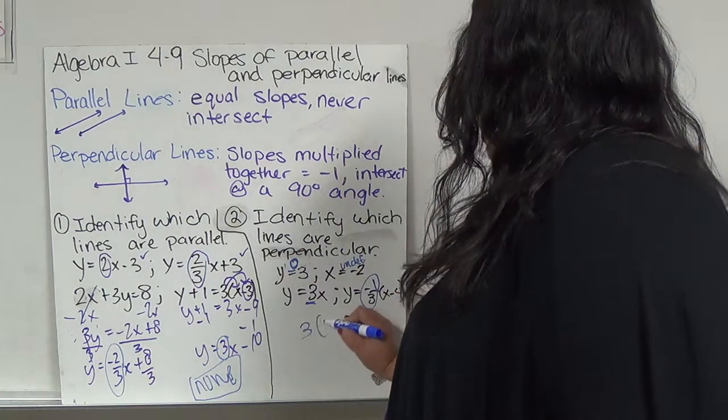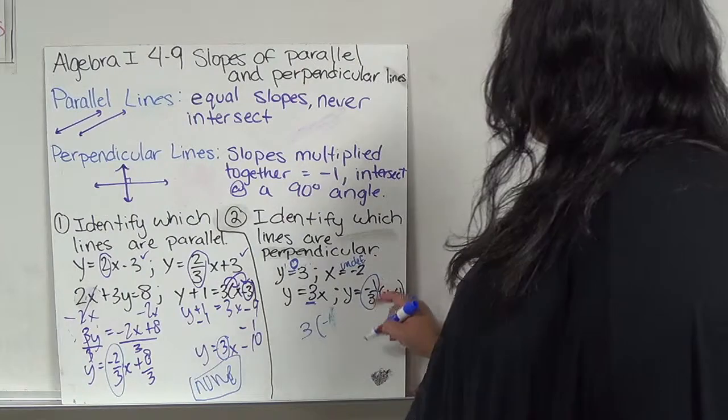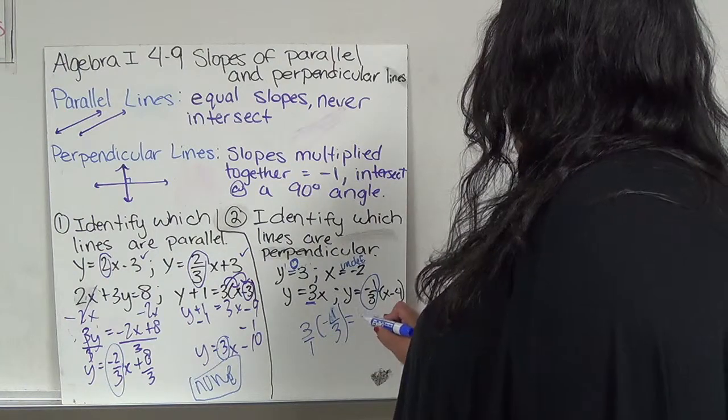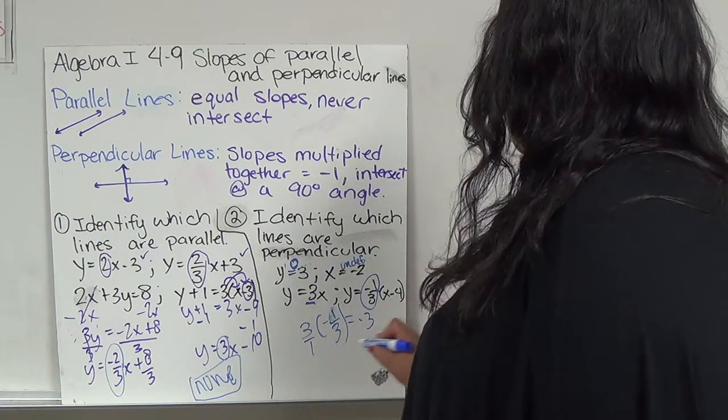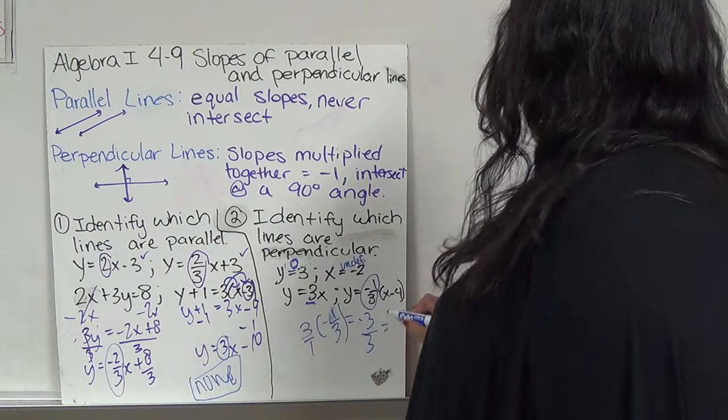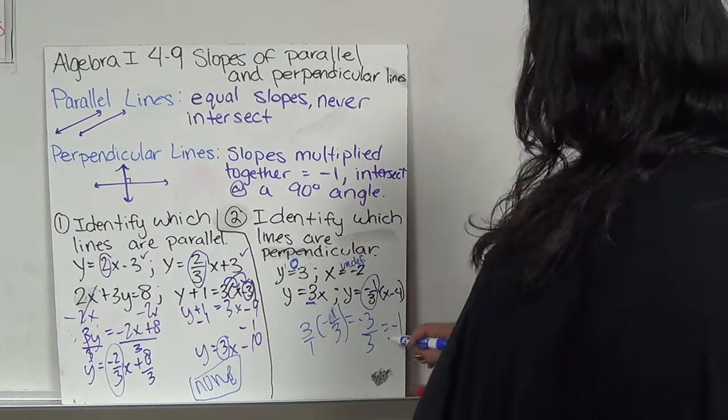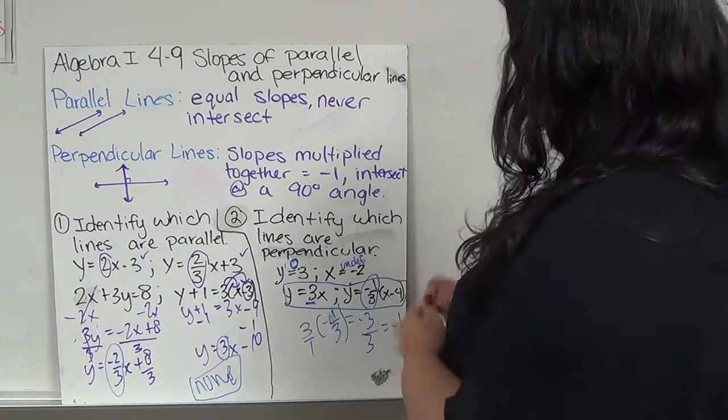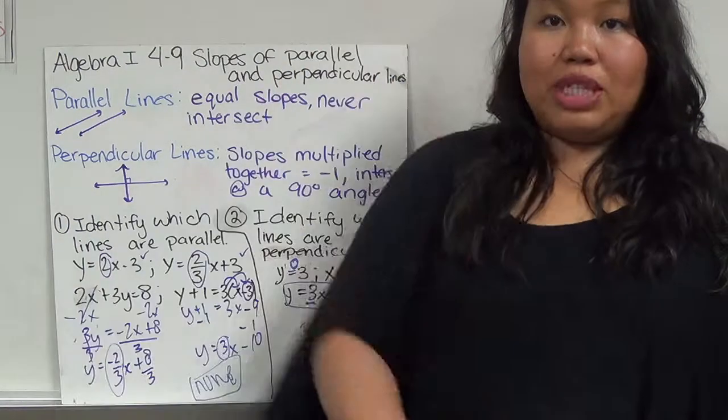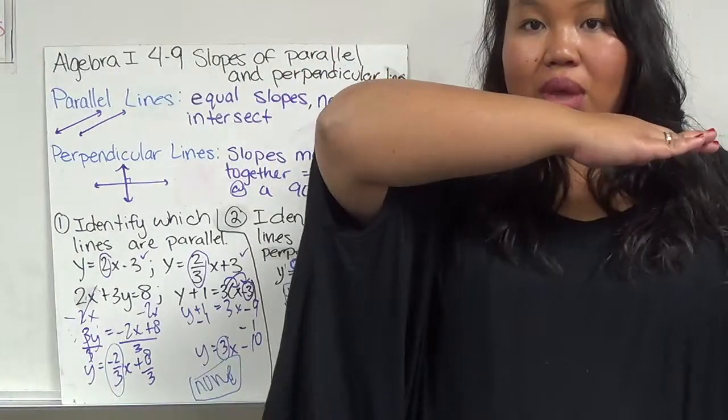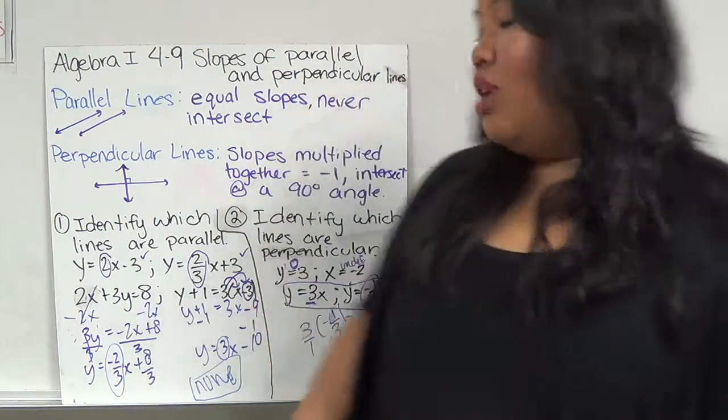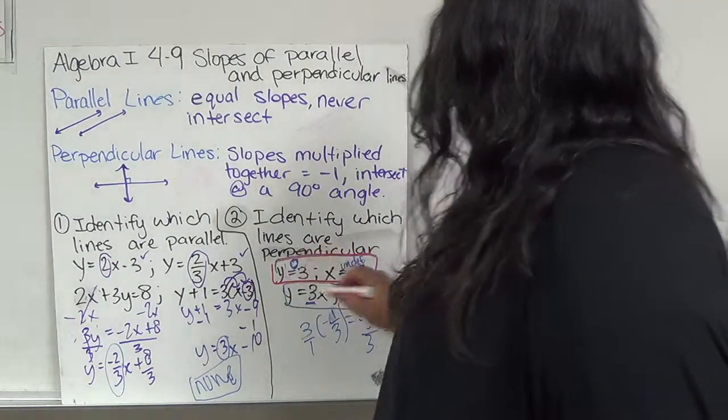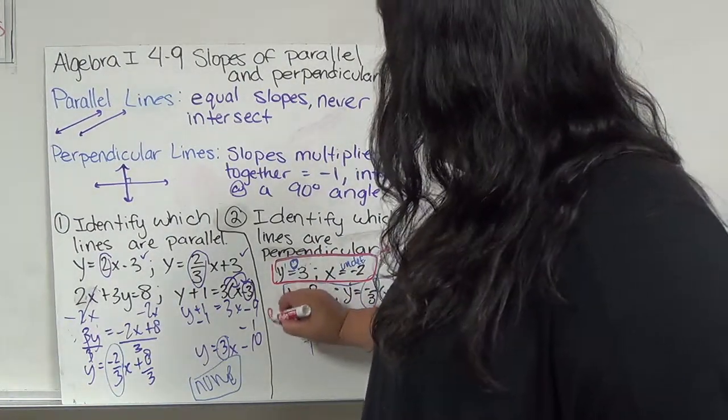This one, the slope is 3, and this one, the slope is negative 1 third. If I multiply them together, 3 times negative 1 is negative 3, 3 times 1 is 3, so negative 3 over 3 is negative 1. So these are perpendicular to each other. And because y equals 3 goes straight left and right with 0 slope, and x equals negative 2 goes straight up and down, these two are perpendicular to each other.